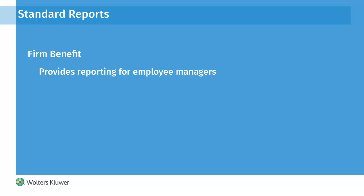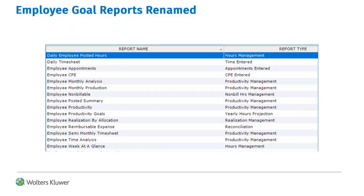Report names have changed. The standard report and the custom library report, each formerly named Employee Budgets, are replaced with the new name Employee Productivity Goals. The reports themselves remain the same.